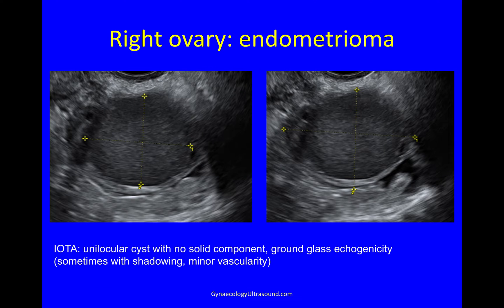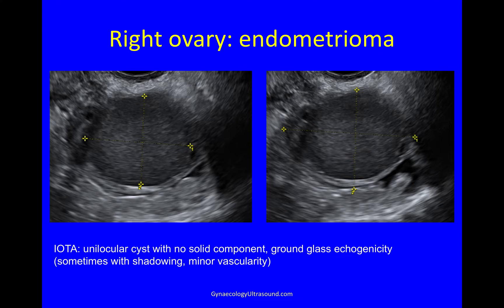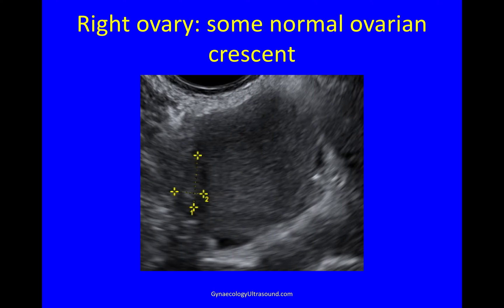Now I'm going to look for the right ovary. You can see here the ovary contains a little cyst. This is it in both planes and it is, using the IOTA criteria, unilocular. There's no solid component but the cyst fluid is of ground glass echogenicity. Sometimes you could see shadowing and minor vascularity, but I haven't shown an image of that. But this is an endometrioma. Just at the edge you can see a little bit of normal ovarian crescent — you can comment on that, though you can't always see it.